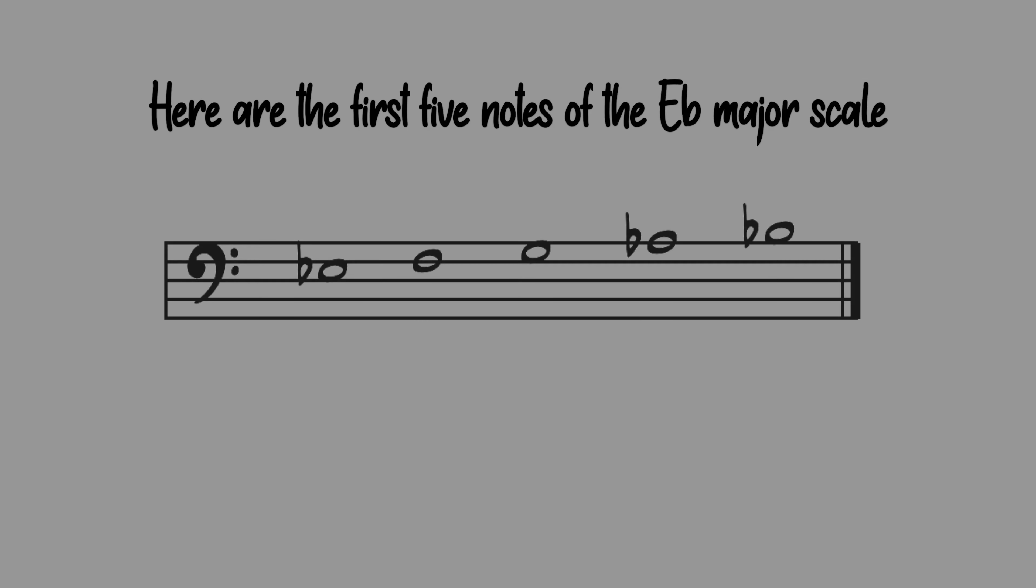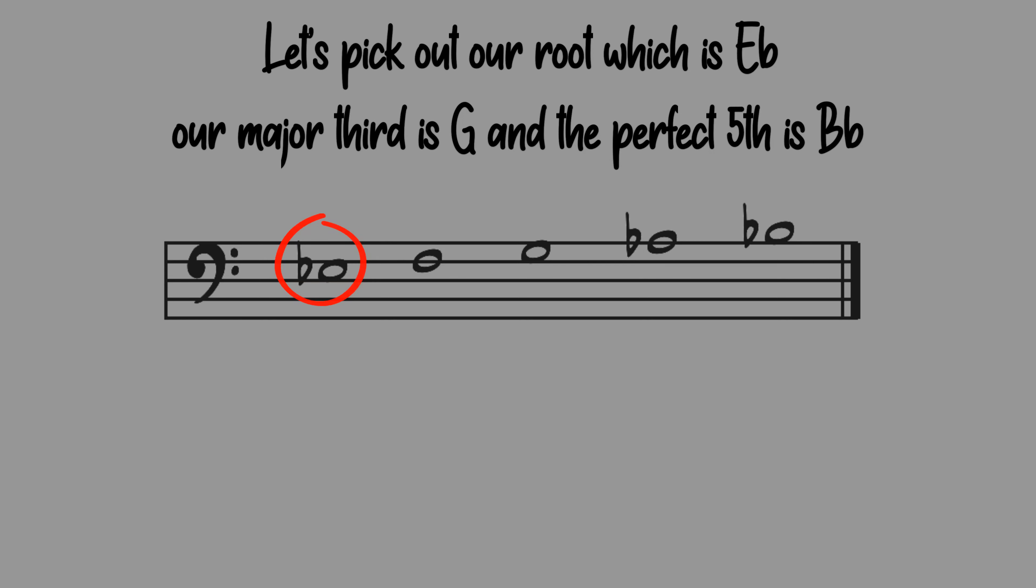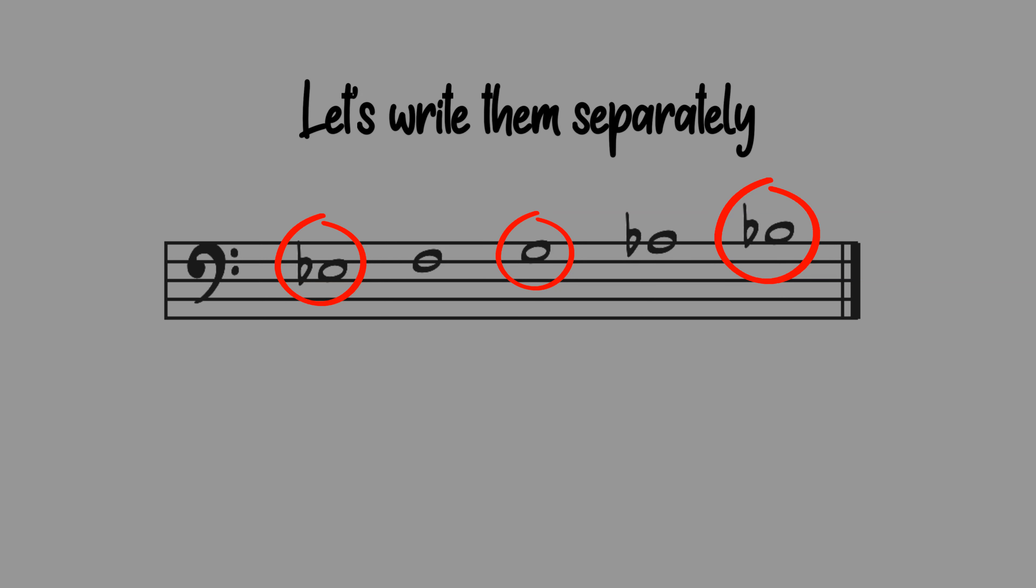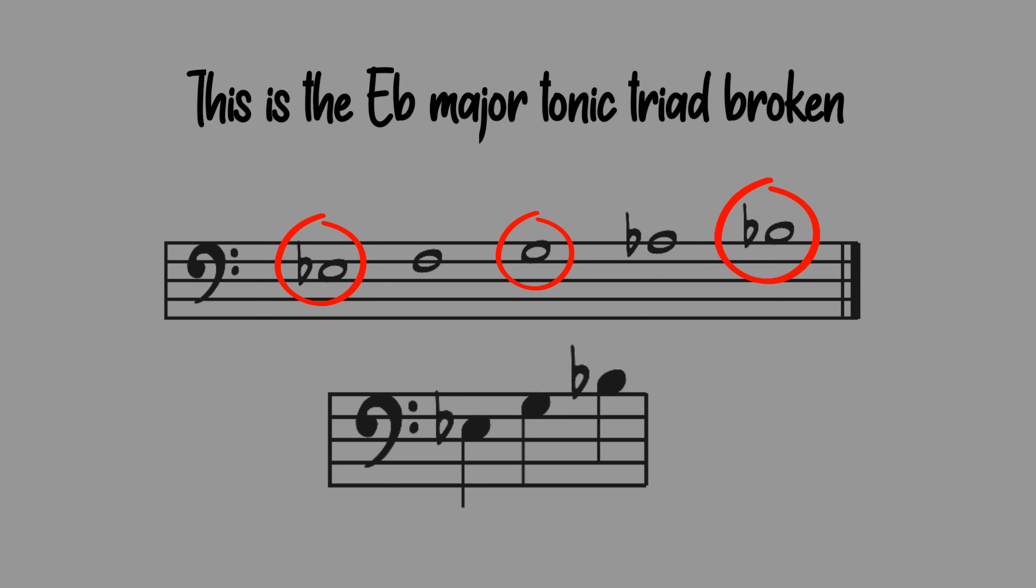Let's try an E flat major tonic triad broken in the bass clef. Here are the first five notes of the E flat major scale. Let's pick out our root E flat. Our major third is G and our perfect fifth is B flat. Let's write them separately. This is the E flat major tonic triad broken.